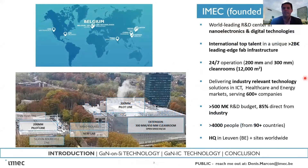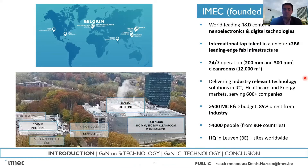Before I deep dive into the technical presentation, let me give you a very short overview about iMac. At iMac we are based in Belgium and we are a world-leading R&D center in nanoelectronics and digital technology. What is part of our DNA is the fact that we deliver industrially relevant technology — everything we do must be used by the industry, and this is true for gallium nitride as well.